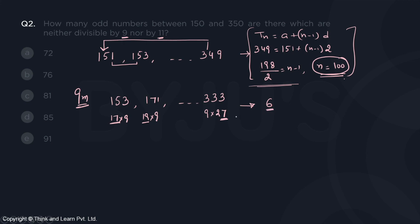9 into 17, 9 into 19, 9 into 21 up to 9 into 37. So there are numbers divisible by 9.